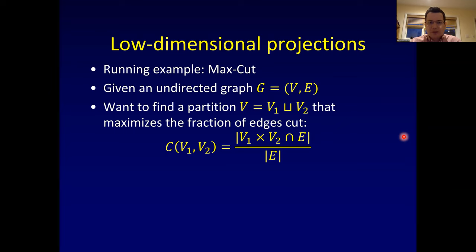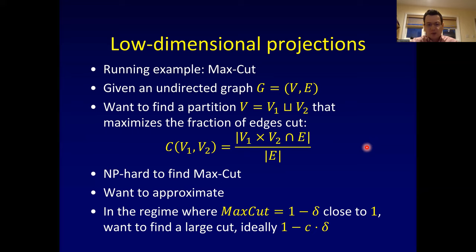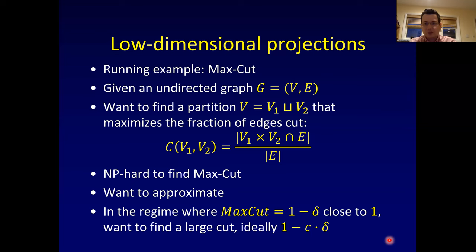Our running example today is max-cut and refinements of the Goemans-Williamson algorithm. The max-cut problem: given an undirected graph G, partition its vertex set into two parts such that the fraction of edges crossing the cut is maximized. It's a well-known NP-hard problem, so the goal is approximation. The regime we'll work in is where there is an almost perfect max-cut — the graph is nearly bipartite, so the max-cut value is close to one, say one minus delta — and we want to find a cut that misses only c times delta of the edges.